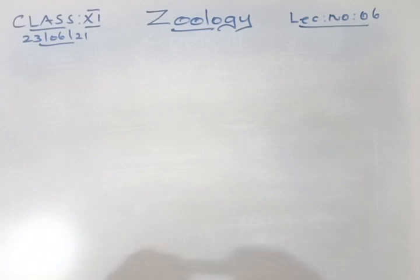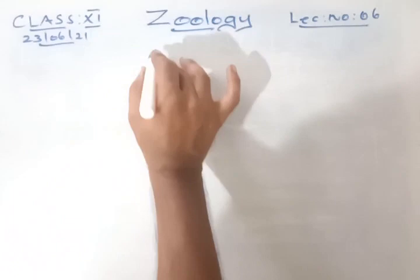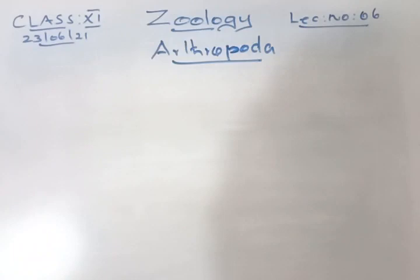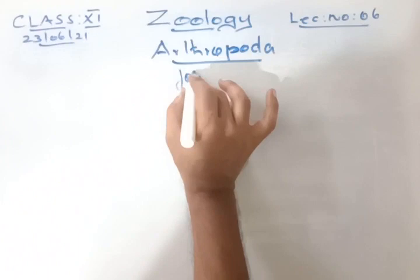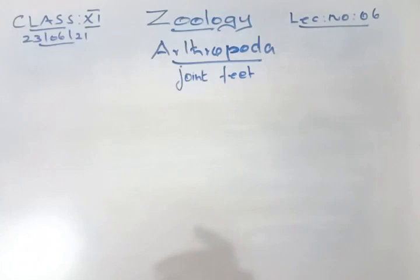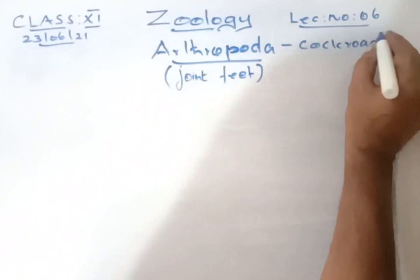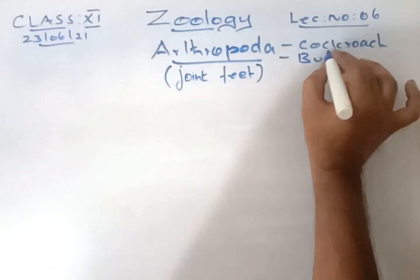Today we are going to study about the Arthropoda. Arthro means joint and poda means feet, so joint-footed animals are called Arthropoda. Examples include cockroach and butterfly — these are all joint-footed animals.